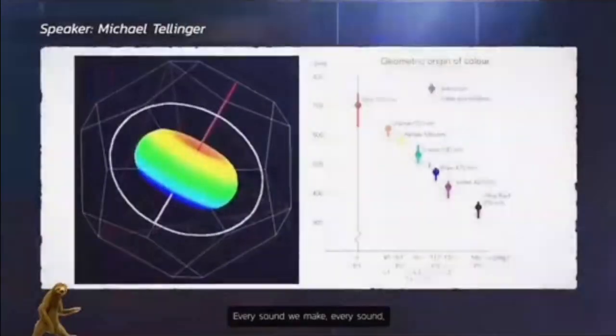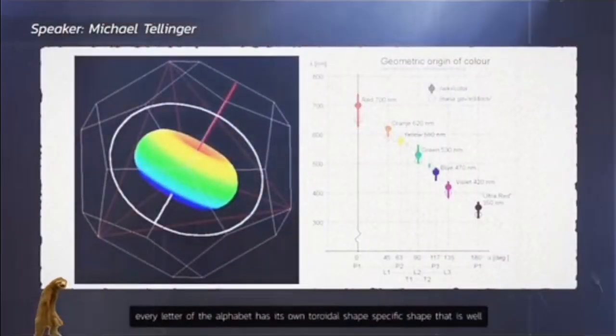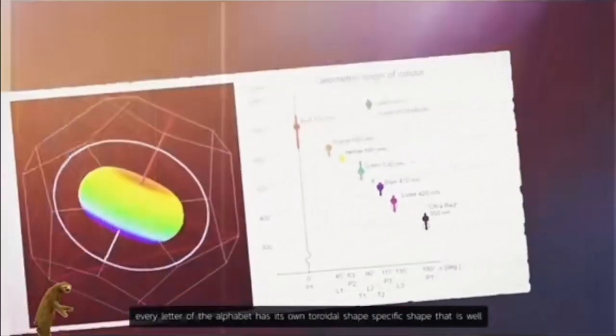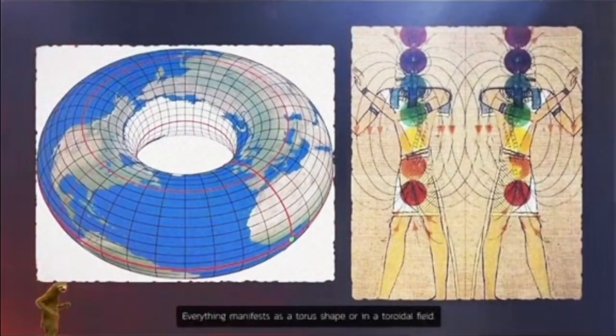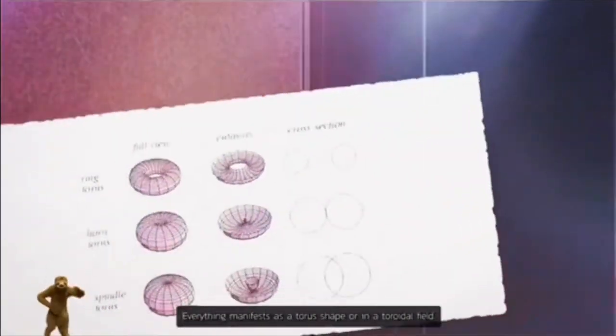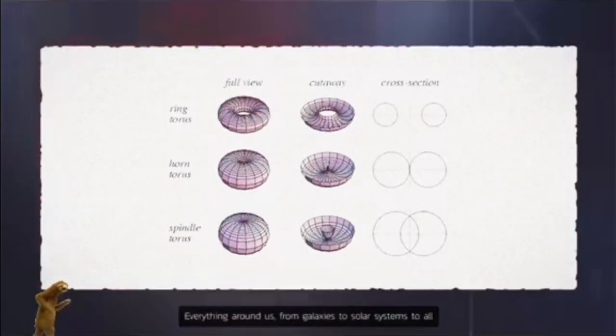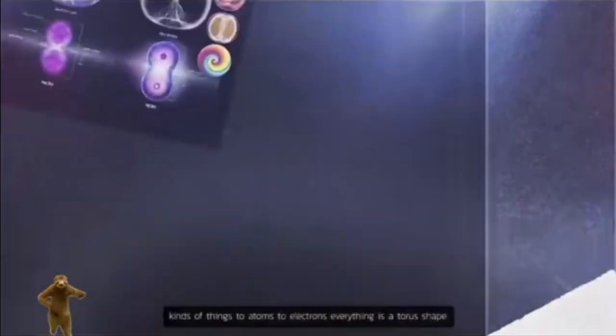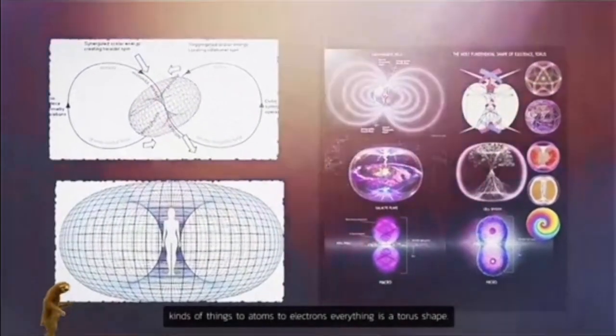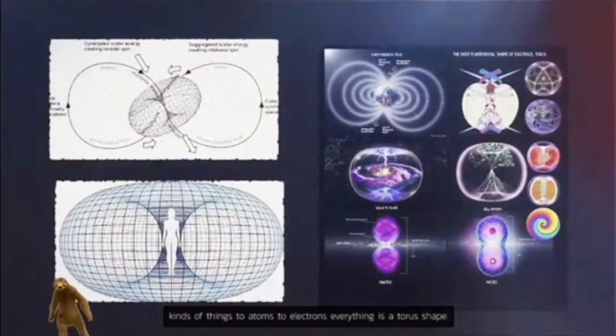Every sound we make, every sound, every letter of the alphabet has its own toroidal shape, specific shape that is well defined and well studied and well recognized. Everything manifests as a torus shape in a toroidal field. Everything around us, from galaxies to solar systems to all kinds of things, to atoms to electrons, everything is a torus shape.